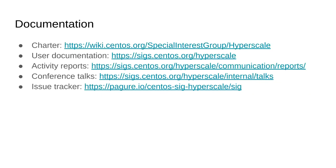You can find our charter on the CentOS Wiki. We also have a documentation website at hyperscale.centos.org, where we keep all of our user documentation around the SIG — both for how you can consume our content, and how people can contribute. We also post activity reports on the blog, all linked there, and we give conference talks whose links are also on that page. We use Pagure to track ongoing work, so if you want to get a sense of what we're working on right now, you can skim that.